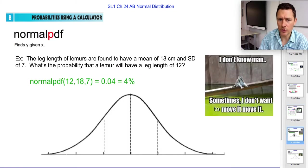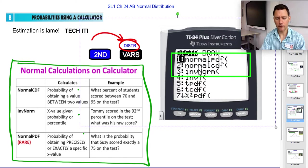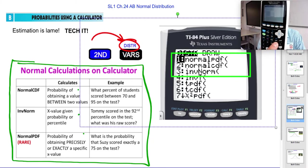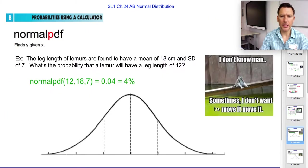So let me show you how to run those on your calculator. They all go through the same thing, which is second distribution curve. So this guy, it's above vars. So second vars.